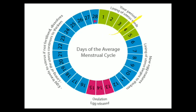The menstrual cycle consists of four phases: the menstrual phase, the follicular phase, the ovulatory phase, and the luteal phase. The reproductive cycle is approximately 28 days, though it may vary from person to person - it may be 26 days or 30 days.